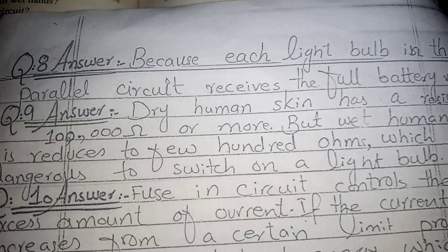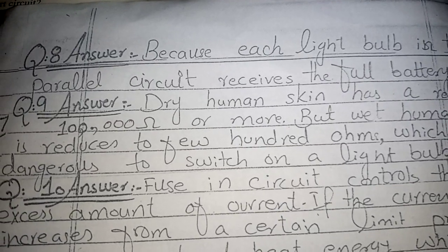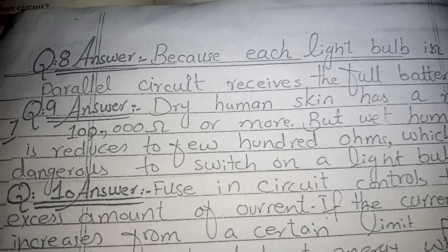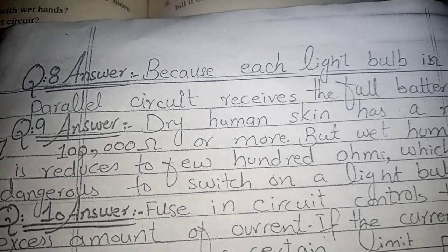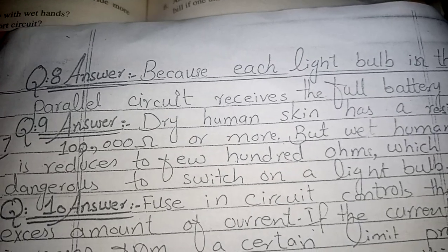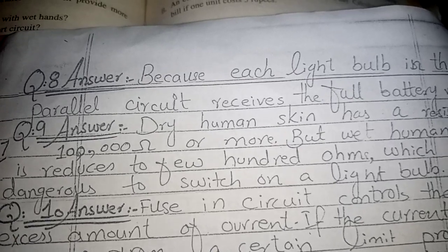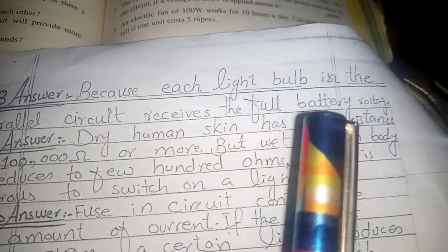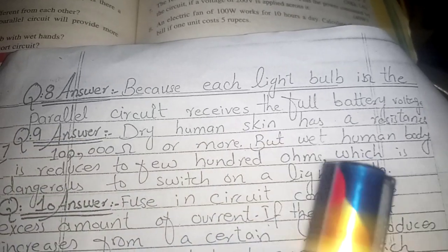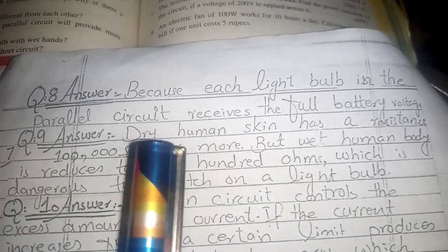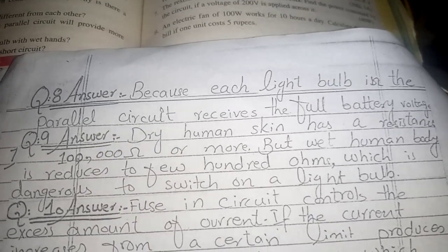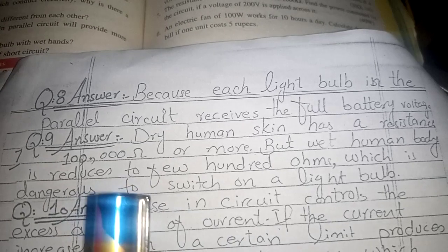Question 8: A number of light bulbs connected in a parallel circuit will provide more illumination — why? The simple answer is that each light bulb in the parallel circuit receives the full battery voltage, which will be maximum, resulting in greater illumination.